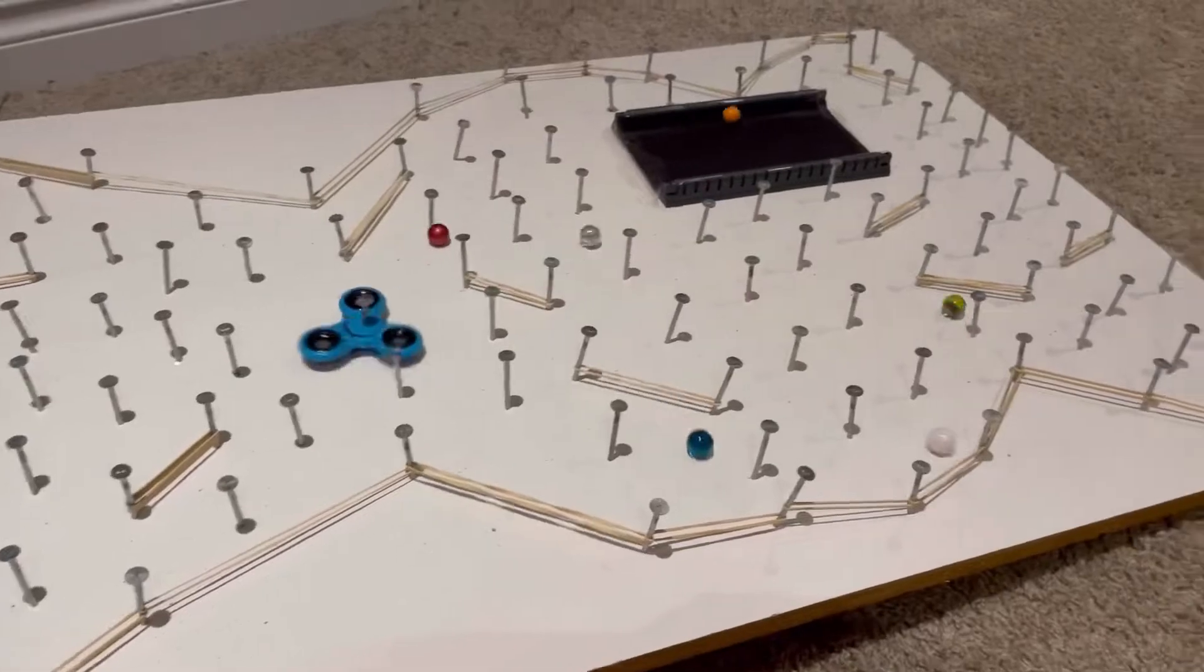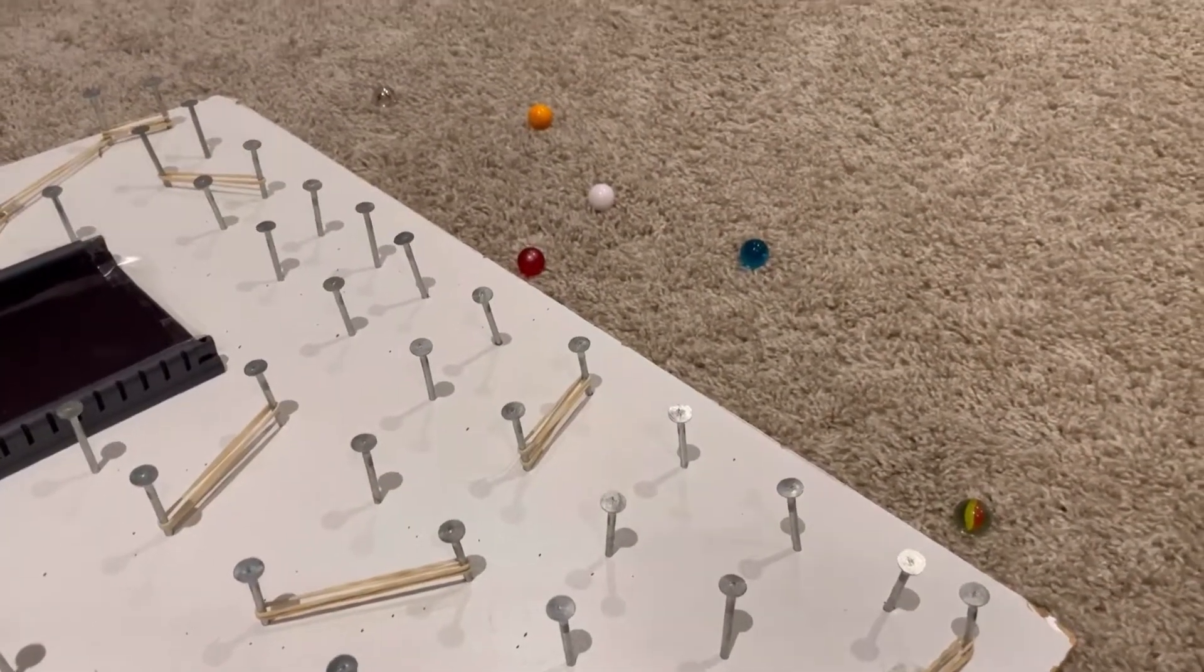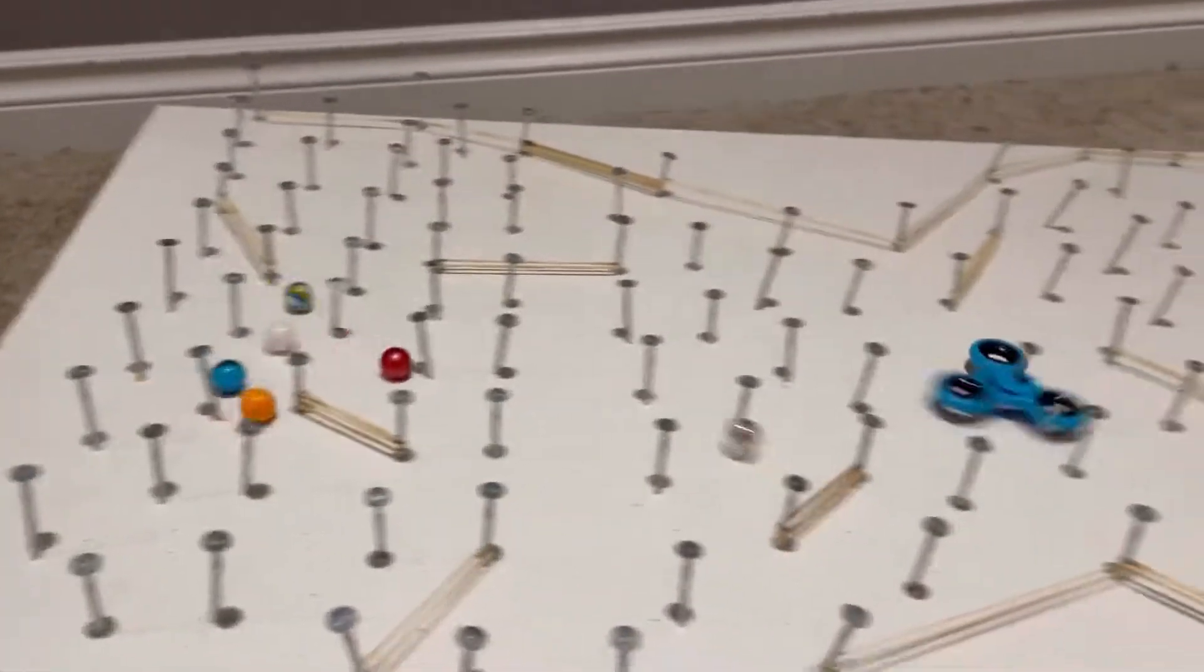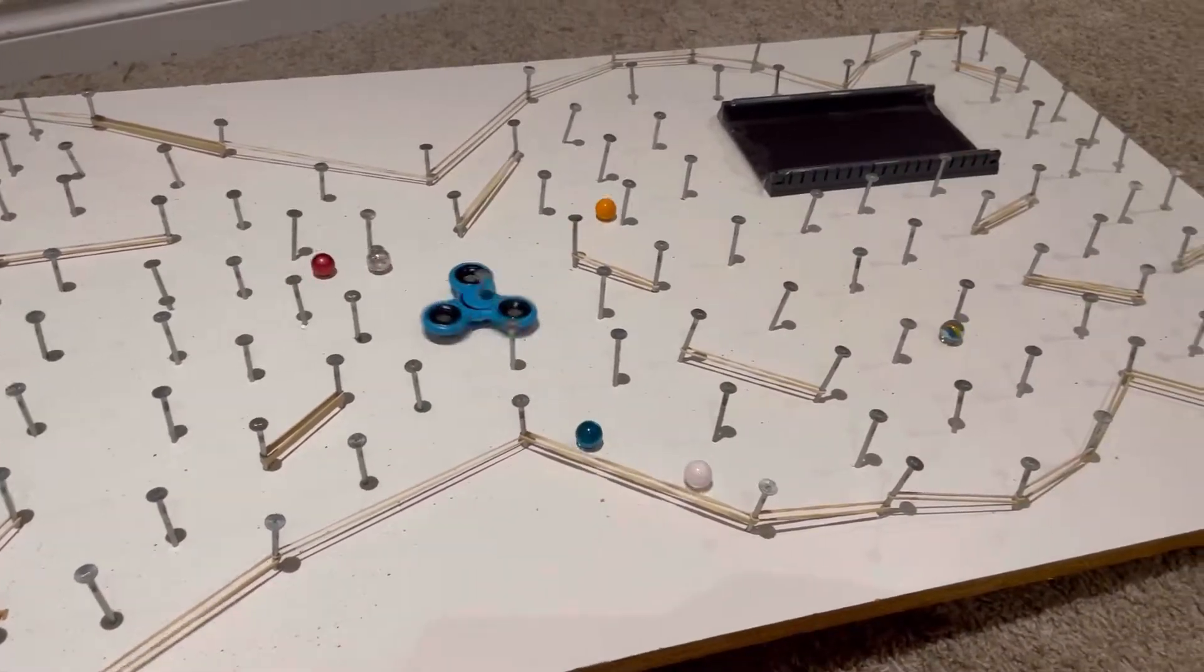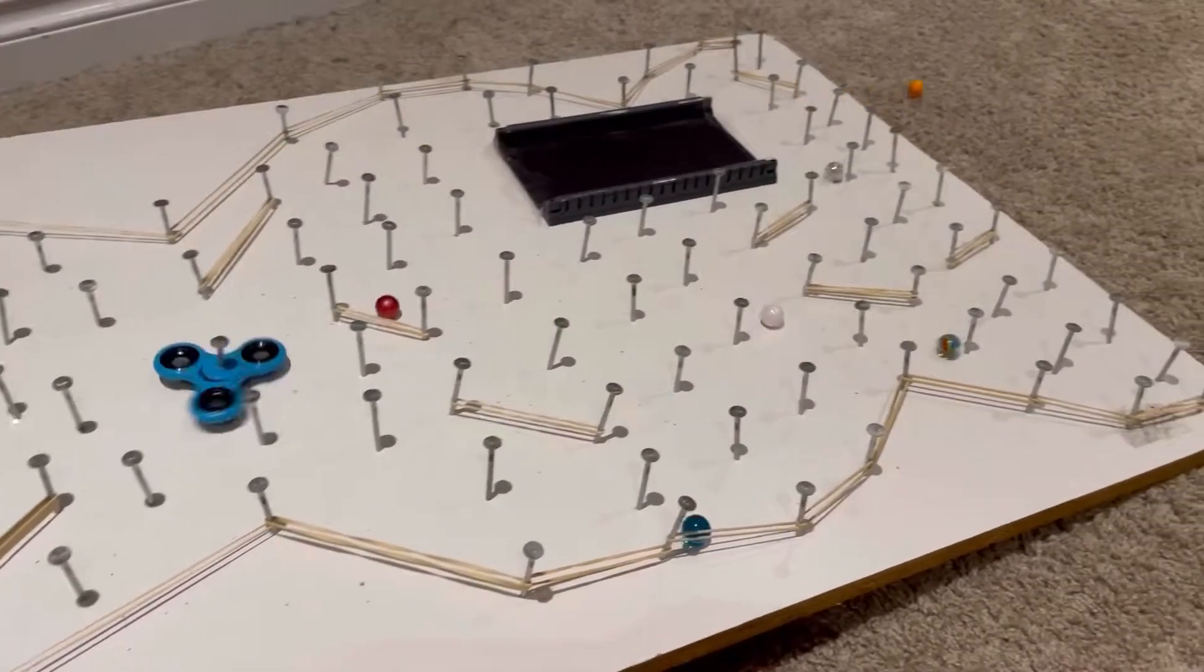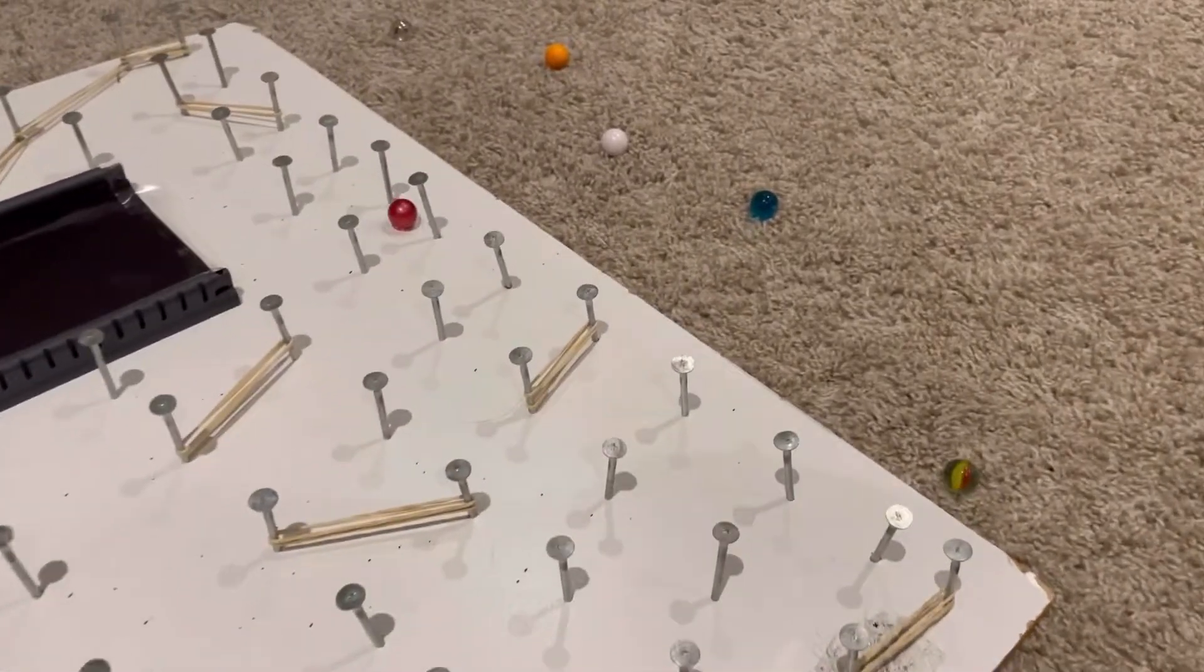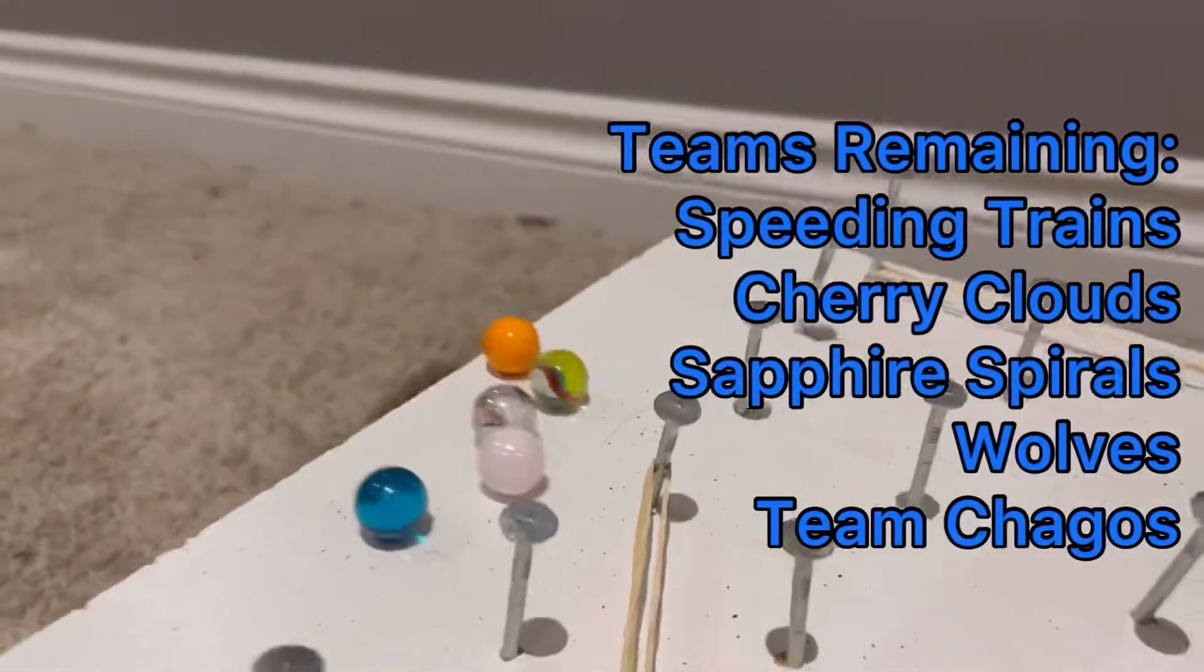And Maple Leafs get the brunt of the Fidget Spinner. This time they're at the back, and they'll be eliminated. Maple Leafs go down here. Wolves got a great early start then that rubber band set them flying. One obstacle can really set you back here. Speeding Trains got the win by taking that fast route. Maple Leafs are out here.